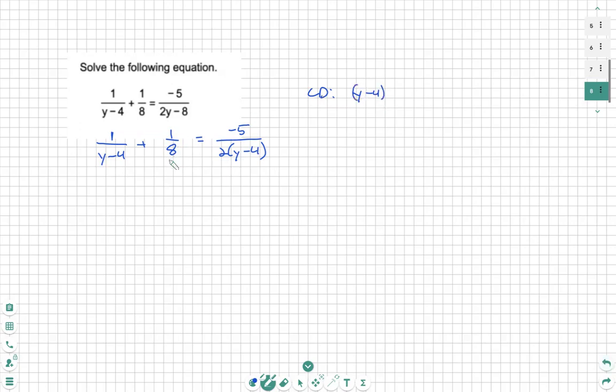And then you have to take the bigger of the numbers when it comes to coefficients like this. So we know we have to take 8 because 2 goes into 8. So the common denominator would be 8 times y minus 4.